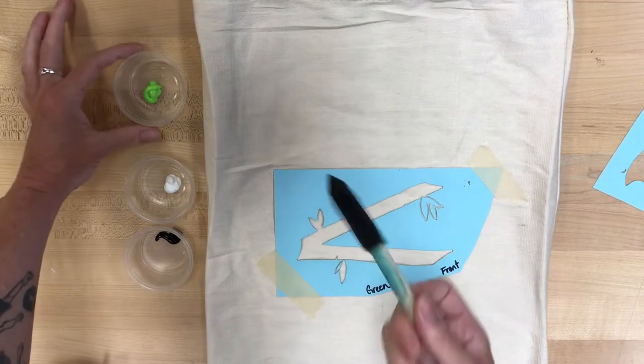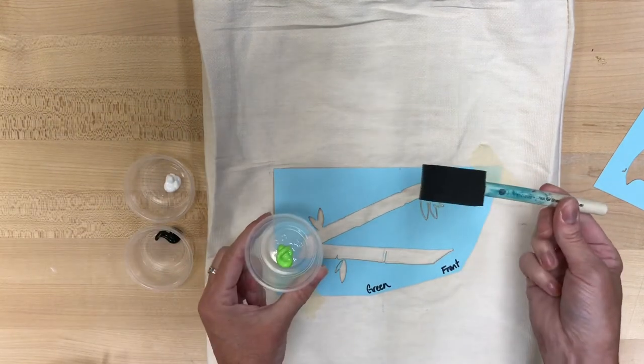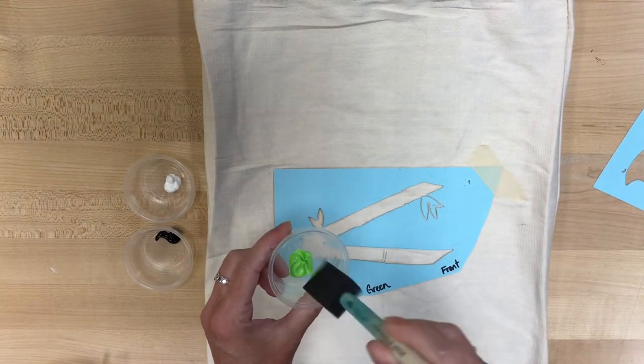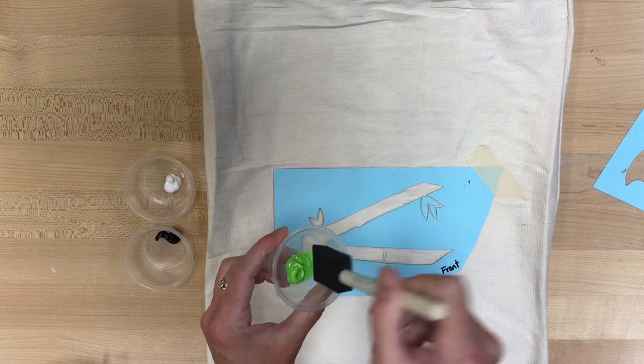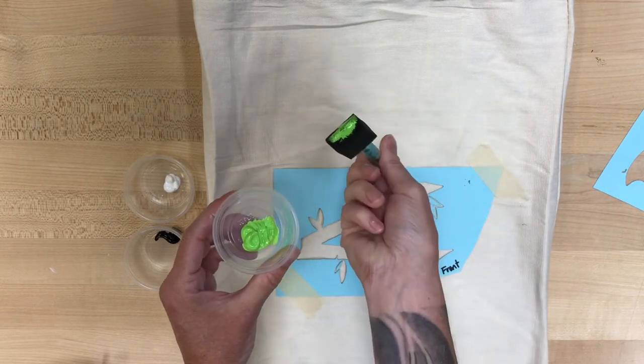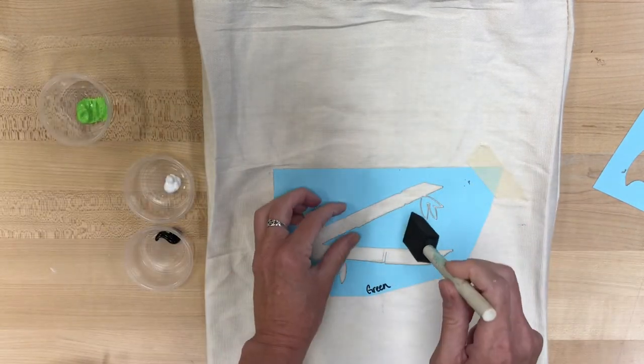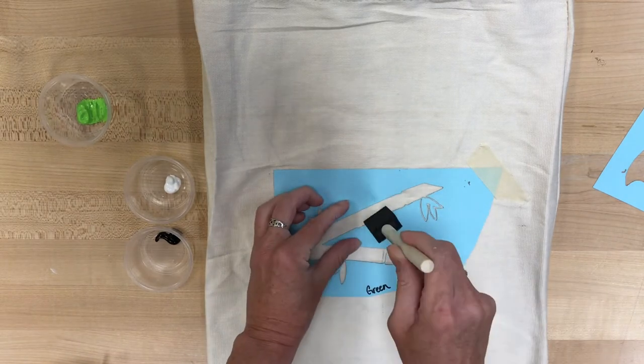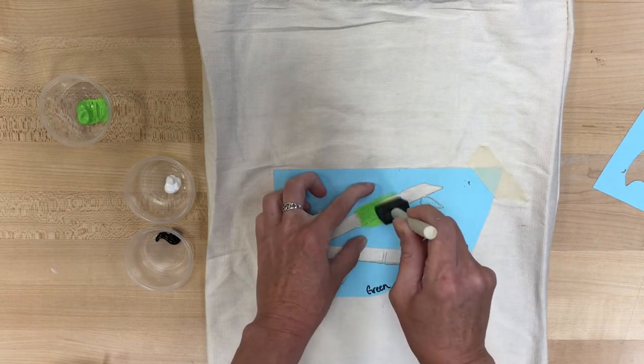What we're also gonna do is as we stencil it on, so you'll take your brush, you'll dip it in the paint. You don't want too much, you don't want too little, and as you dab that on, you can see with my left hand, I'm kind of holding it in place.